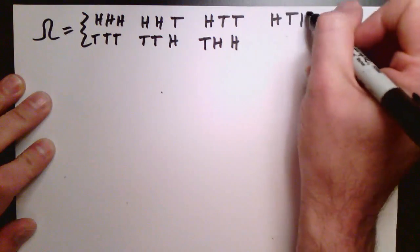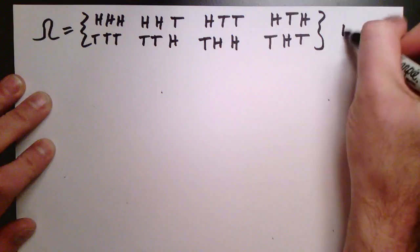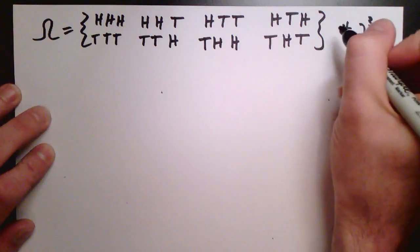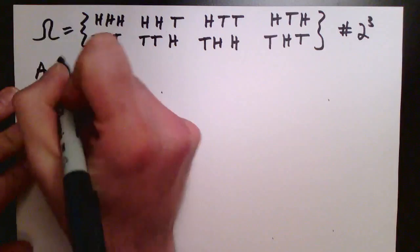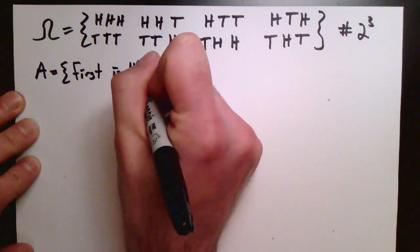And similarly, heads, tails, tails, heads, tails, tails, tails, tails, tails, heads—you get the idea. There's a total of three—two to the third possibilities because I have two choices for the first one, two choices for the second, two choices for the third, multiply that together, that's two to the third.